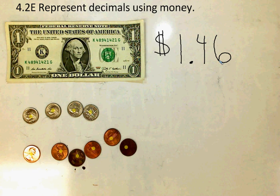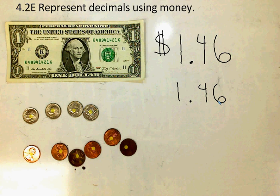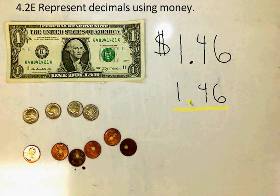If I want to do it as a decimal, it would be one whole, four tenths, and six hundredths. I would read that as one and forty-six hundredths. You'll also notice I use the word 'and' whenever I read decimals — the 'and' represents that we're separating the wholes from the parts of the whole.